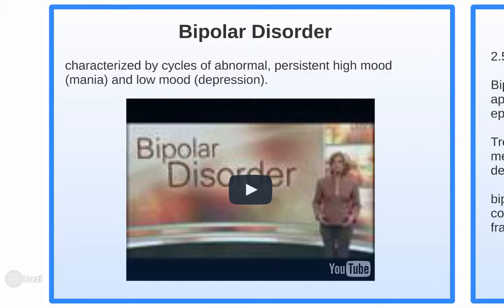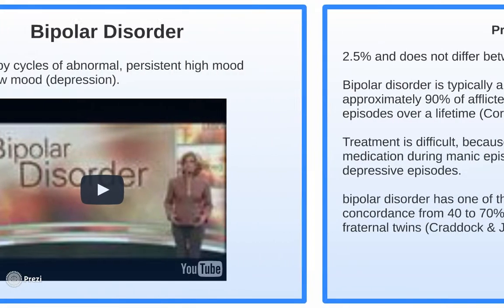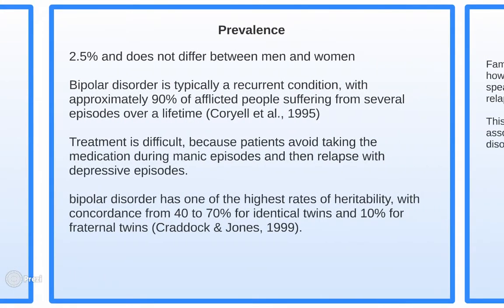Moving on to bipolar disorder: you have cycles of abnormally, persistently high mood — mania, which is generally a positive feeling — and then you have the fall into depression. It's a rise-and-fall cycle. About 2.5 percent of people have it. It's a recurrent condition; approximately 90 percent of afflicted persons will have several episodes over a lifetime.